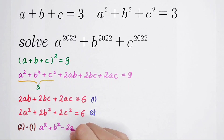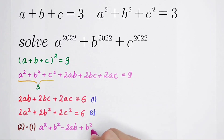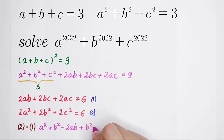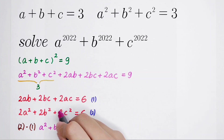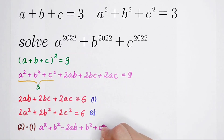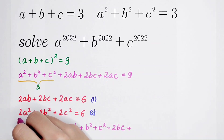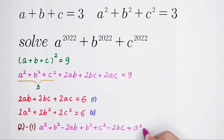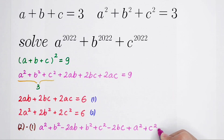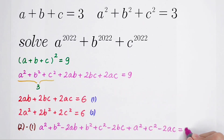Then it can be written as: A squared plus B squared minus 2AB, plus B squared plus C squared minus 2BC, plus A squared plus C squared minus 2AC, equal to 6 minus 6, which is 0.